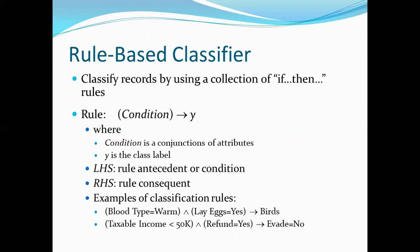An example of a classification rule: if blood type is warm and lay eggs is yes, then the animal belongs to the bird family. Both conditions must be satisfied to reach the conclusion.